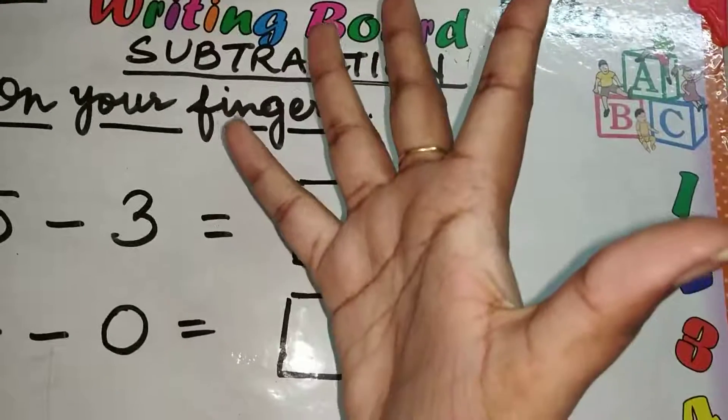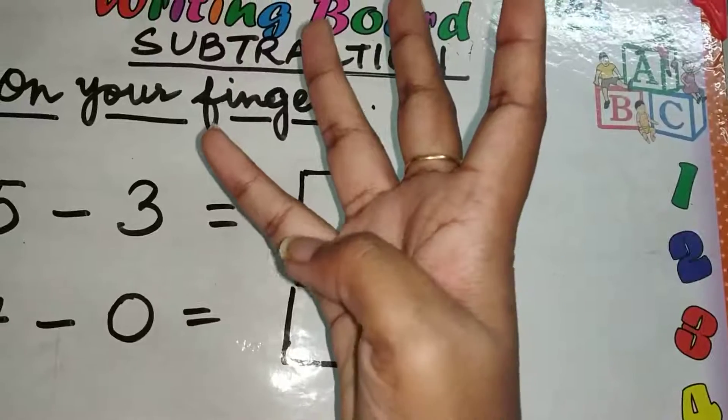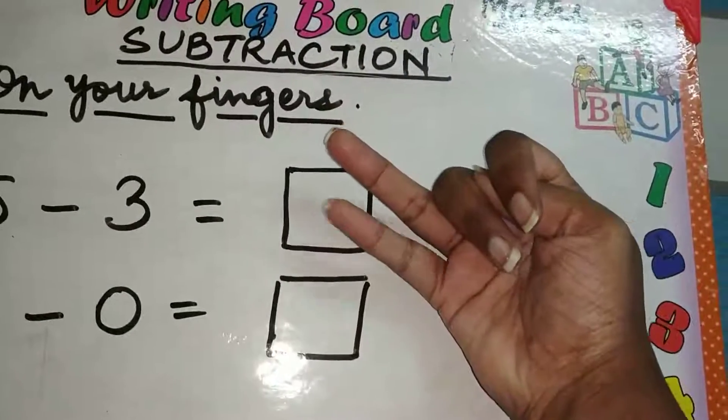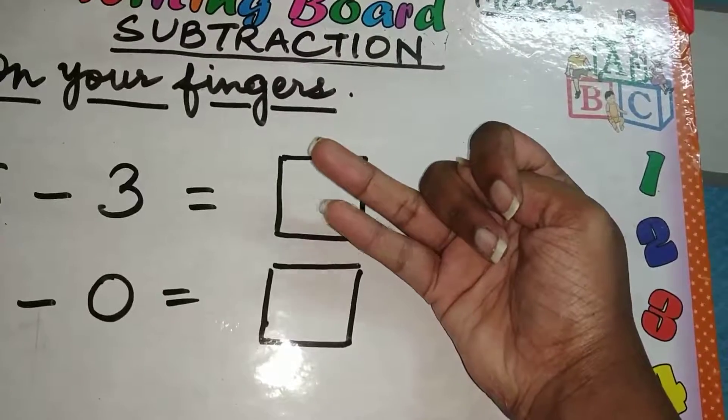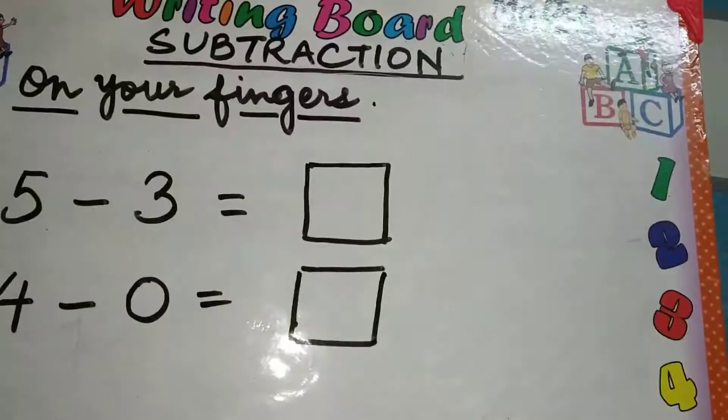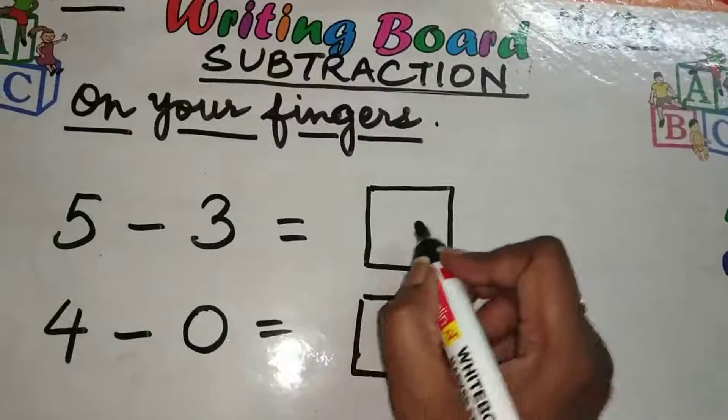Out of five, you have to bend three fingers. Let's bend one, two and three. So, how many left? How many fingers left standing? This is your answer. So, we are going to write two.